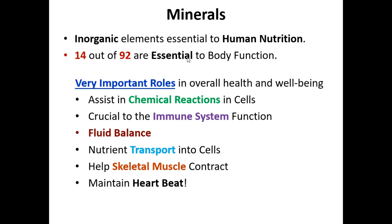Sulfur — more appropriately called sulfate in the body — is associated with amino acids. The amino acids methionine and cystine contain a sulfur atom. They are actually the main source of sulfate for the body. The sulfate used in body processes comes from methionine and cystine; they are the carriers of your sulfate.